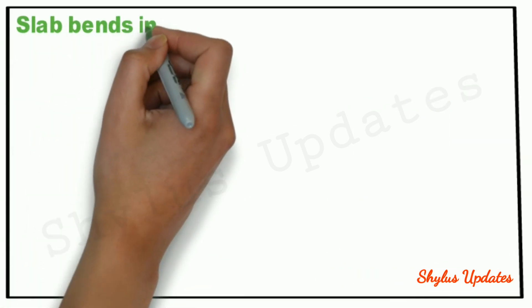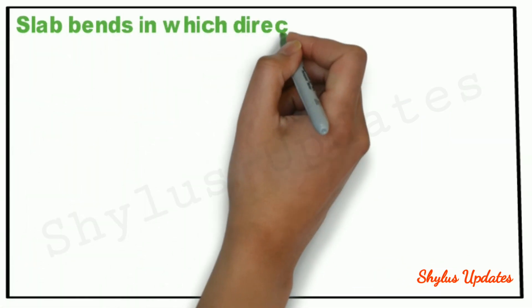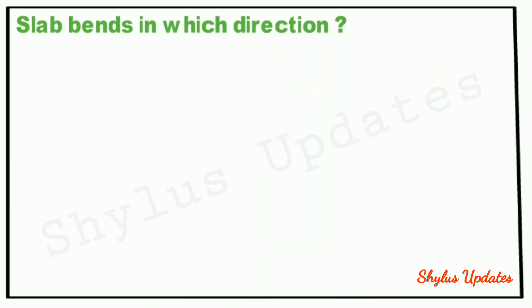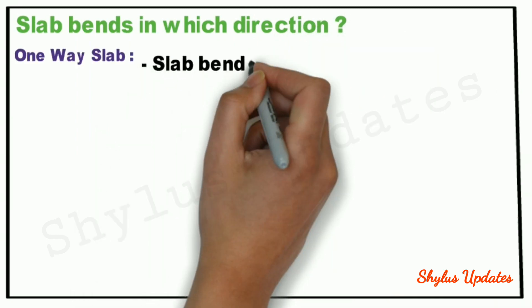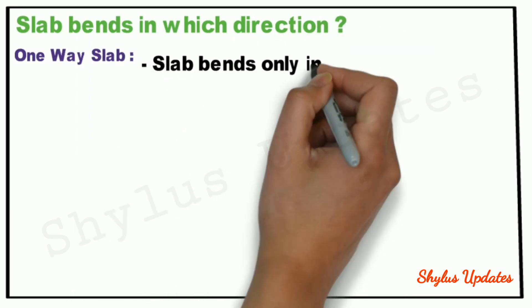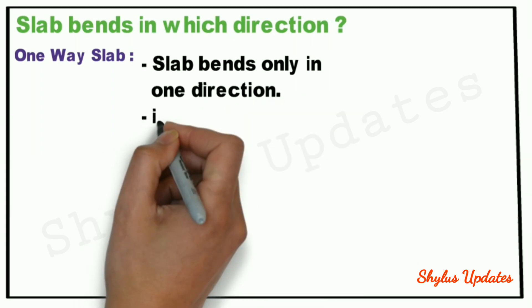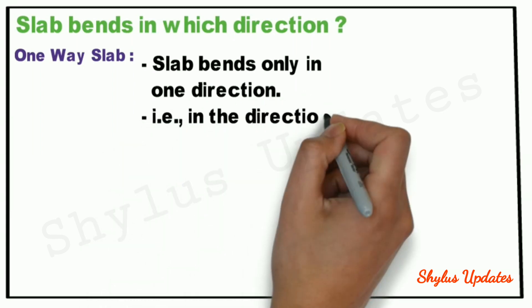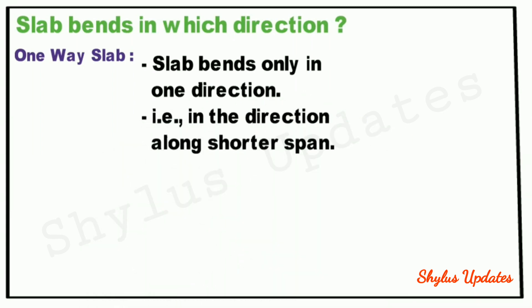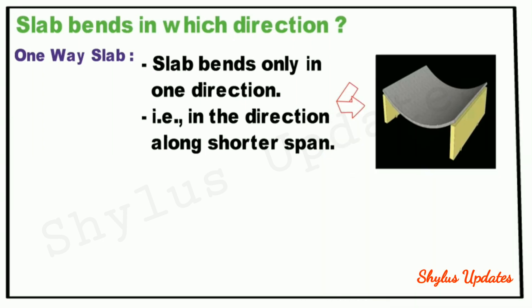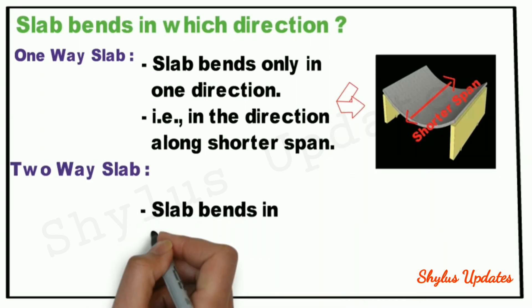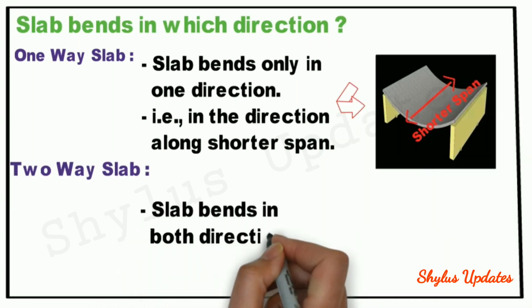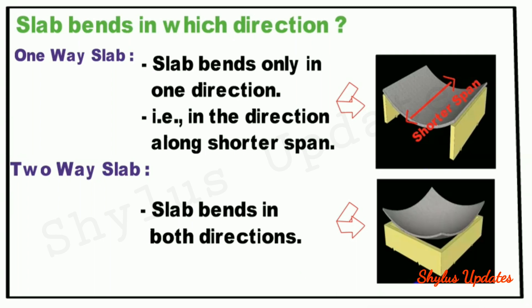Slab bends in which direction? In a 1-way slab, the slab bends only in one direction — that is, in the direction along the shorter span, as you can see in this picture. In a 2-way slab, the slab bends in both directions, as shown in this picture.